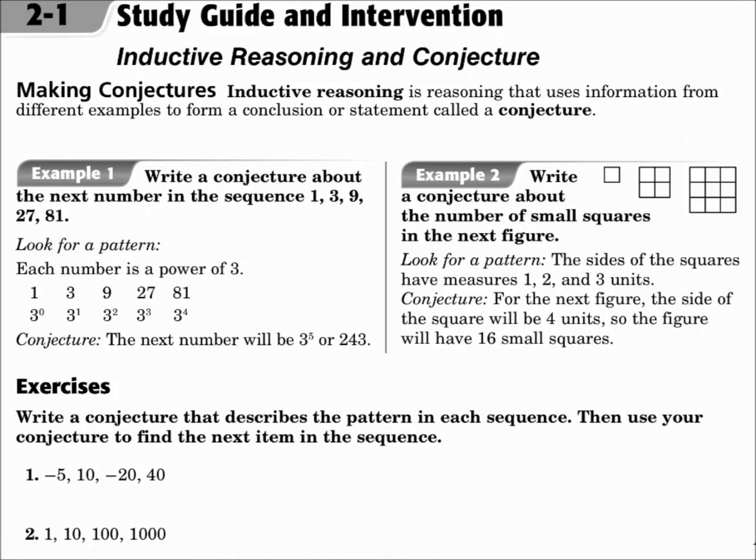This is Lesson 2.1, Inductive Reasoning and Conjecture. Your objectives are to make conjectures based on inductive reasoning and to find counterexamples. Inductive reasoning is reasoning that uses information from different examples to form a conclusion or statement called a conjecture. It's just a guess. You use the information you have and make a guess based on that information.